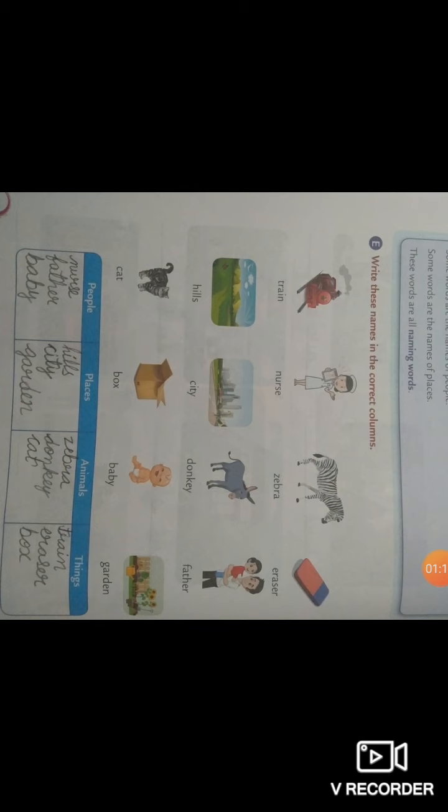You will write down train in things column. Next is nurse. Nurse is the name of a people or person. You will write down the word nurse in column of people.